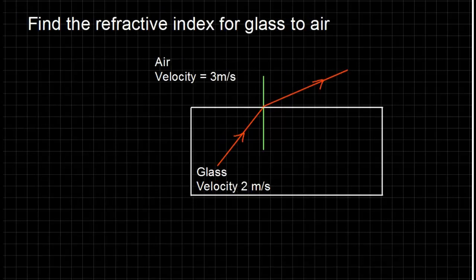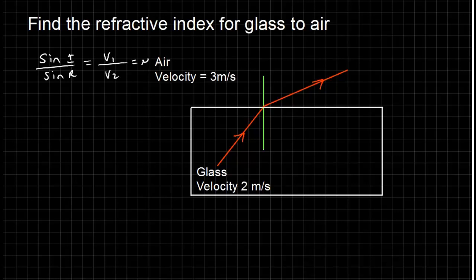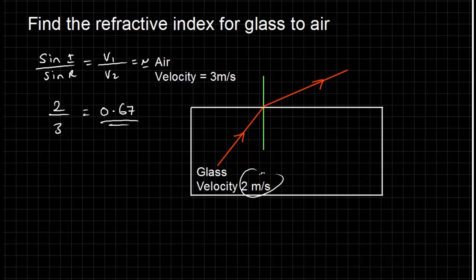Let's find the refractive index from glass to air. From glass to air: 2 meters per second to 3 meters per second. I don't have any angles — just start by writing the whole formula out. I have V1 and V2, so it's just V1 over V2: 2 divided by 3 equals 0.67. As you can see, you can get the refractive index just by using the velocities as well.